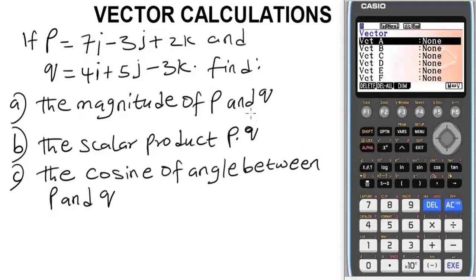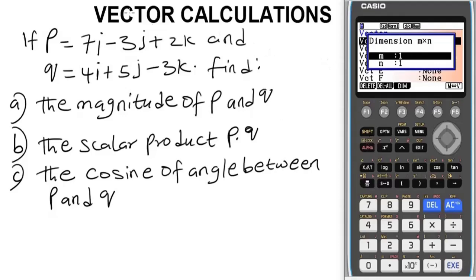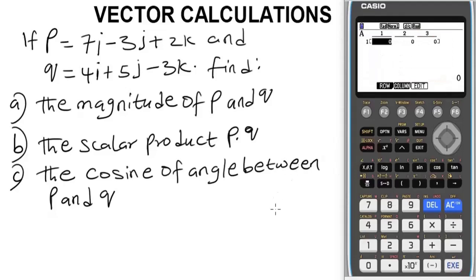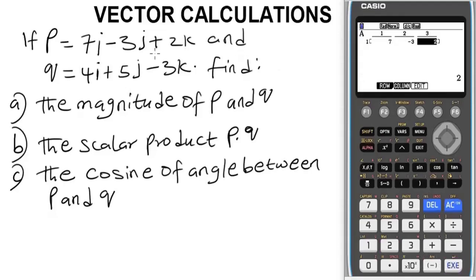For vector A, our vector A here represents vector P in this question. The dimension of vector P, which is our vector A on the calculator, will be 1 by 3 — that is a 1 by 3 dimensional vector. Now let's enter the values: vector P is 7, minus 3, and 2. Press exit when done.